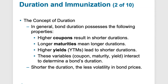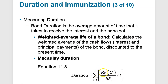The bond duration possesses these properties: higher coupon results in shorter duration; longer maturities mean longer duration; higher yields or yield to maturity lead to shorter duration. These variables — coupon, maturity, and yield — interact to determine a bond's duration. The shorter the duration, the less volatile the bond price will be. The Macaulay duration is the average amount of time it takes to receive interest and principal — a weighted average of the bond's cash flows discounted to the present.